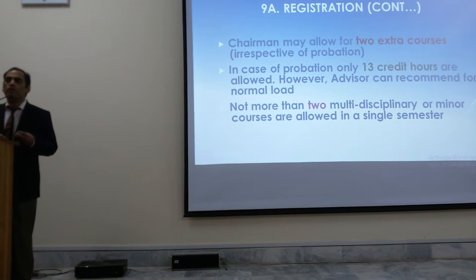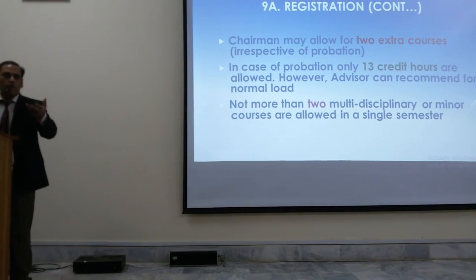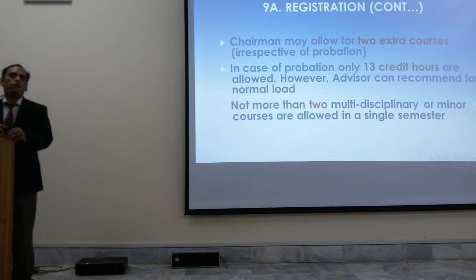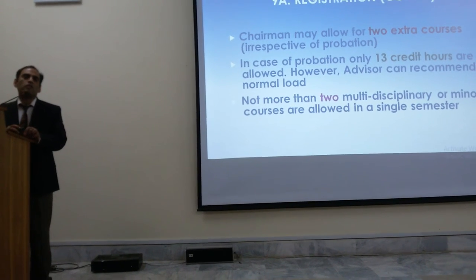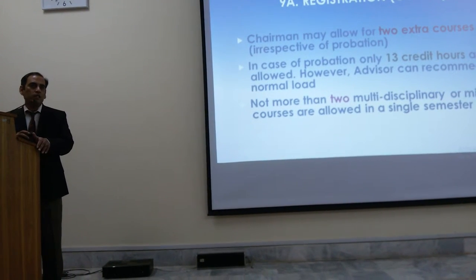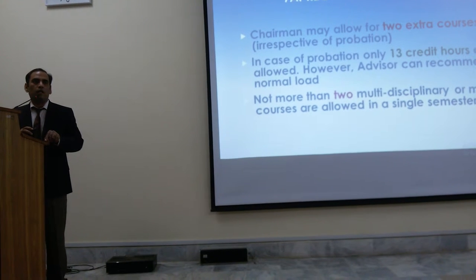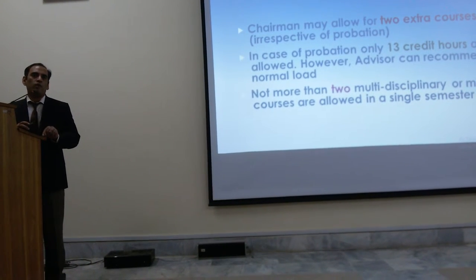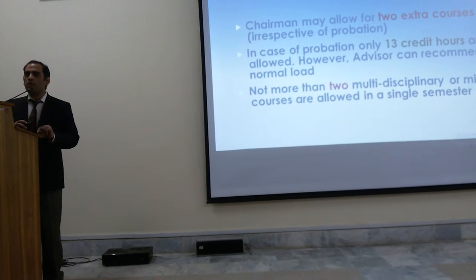The chairman's allowance for 2 extra courses is tied to the condition that you want to complete your degree in that particular semester. Regarding probation: if in some particular semester your GPA is less than 2, you are put on probation for undergraduate students. For MPhil, probation applies if the GPA is less than 2.5, and for PhD, it is less than 3. If you are an MPhil student and your GPA in a particular semester is less than 2.5, that is considered probation.